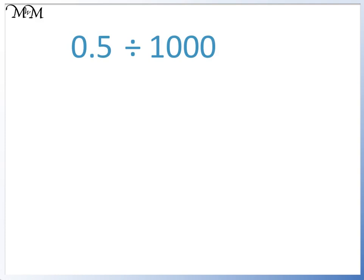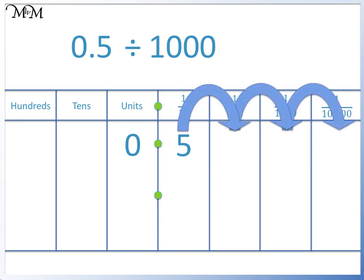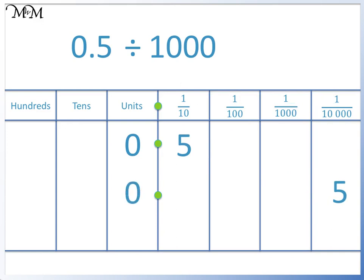0.5 divided by 1000. Because we only have zero in front of the decimal point, we can start by looking at 5. We move 5 three places to the right: 1, 2, 3. We write in a zero to the left of the decimal point, and place three zeros in the spaces between the decimal point and the 5. 0.5 divided by 1000 equals 0.0005.